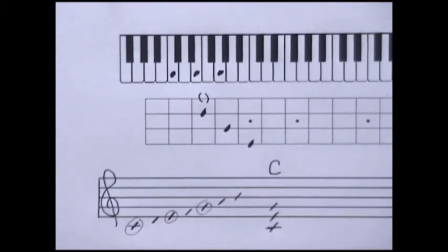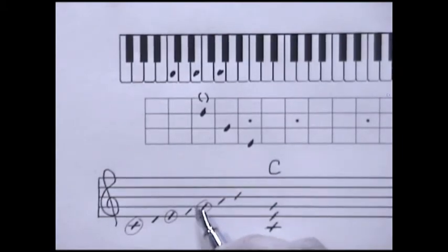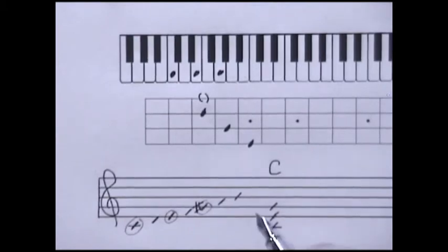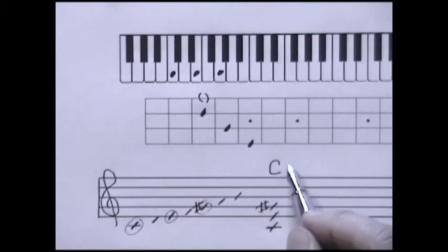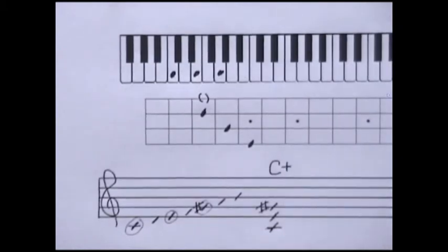If I want to transform the C major triad into a C augmented triad, I'm going to raise the fifth degree by half a step. So the G will become a G sharp on the staff. I put a sharp sign in front of the G, a sharp sign in front of the G in the chord, and a plus sign in the chord symbol. That plus sign is reserved to mean that we sharpen the fifth degree.